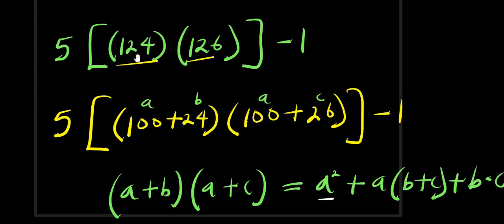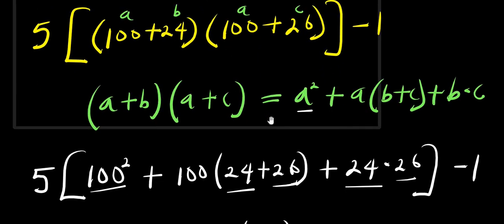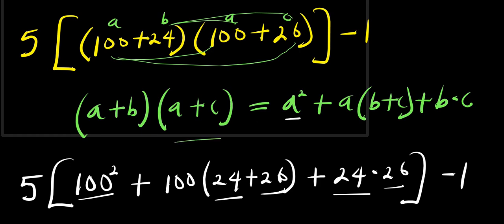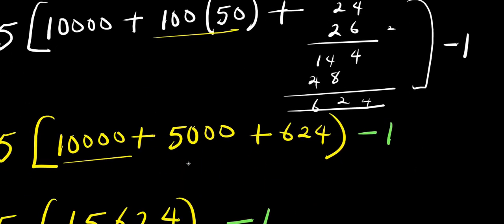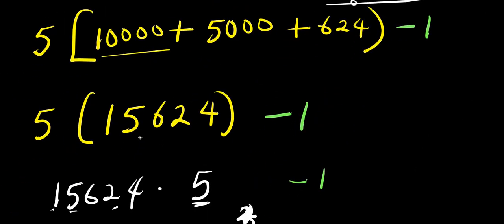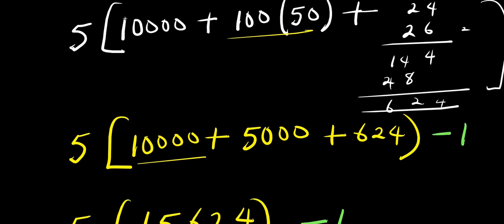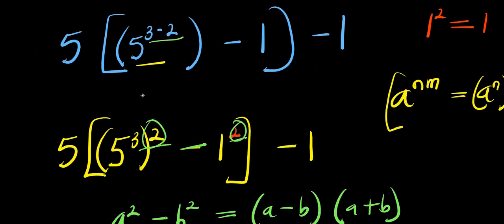But if you need to work it out fully, express 124 as 100 plus 24, and 126 as 100 plus 26, then multiply them out using 100 times 100, 100 times 26, 24 times 100, and 24 times 26 — that's exactly what was done here. After this you get 15,624, multiply that by 5, then subtract 1, and this gives you 78,119. That's it — goodbye.